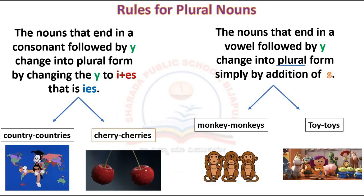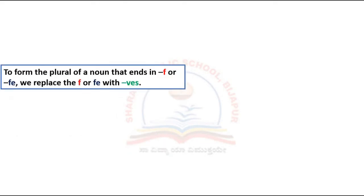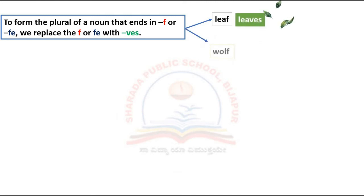Children, there are some more rules. To form the plural of a noun that ends in 'f' or 'fe', we replace the 'f' or 'fe' with 'ves'. For example, leaf becomes leaves, wolf becomes wolves.